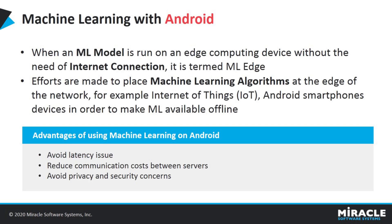When an ML model is run on an edge computing device without the need for an internet connection, it is termed as ML Edge. Efforts are made to place machine learning algorithms at the edge of the network — for example, Internet of Things or Android smartphone devices — in order to make ML available offline. Using intelligent edge technology can help maximize business efficiency. Instead of sending data out to a data center or third party, analysis is performed at the location the data is generated. Not only does this mean analysis can be performed more quickly, but it also decreases the likelihood that the data will be intercepted or breached. The advantages of ML Edge are: it helps to avoid latency issues, it helps in reducing communication costs between servers, and it avoids privacy and security concerns related to data.